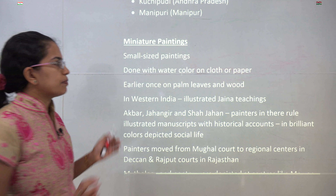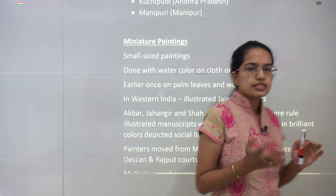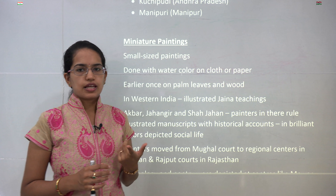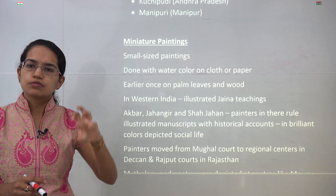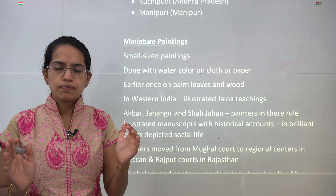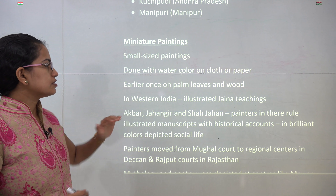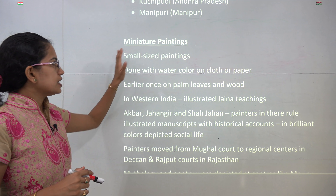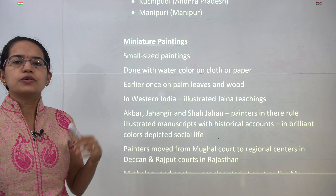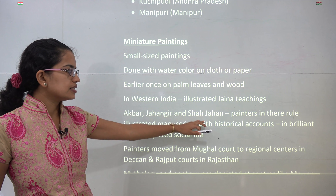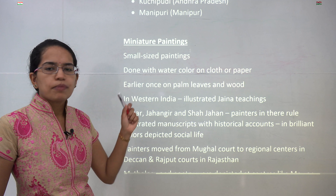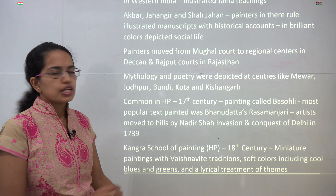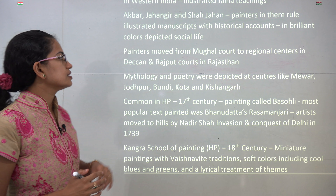The next important topic is paintings. Paintings have been a part of art and culture since a long period. However, with the Mughal advent, the miniature painting concept came into being. Miniature, as the name suggests, is a small size — paintings on smaller sets of cloth, paper, or wood, done with watercolor. Previously they were done on palm and wooden leaves and illustrated various Jain teachings. During the period of Mughal emperors like Akbar, Jahangir and Shah Jahan, these miniature paintings were part of manuscripts depicting historical accounts and the social life of the people, mainly drawn in dark and brilliant colors.